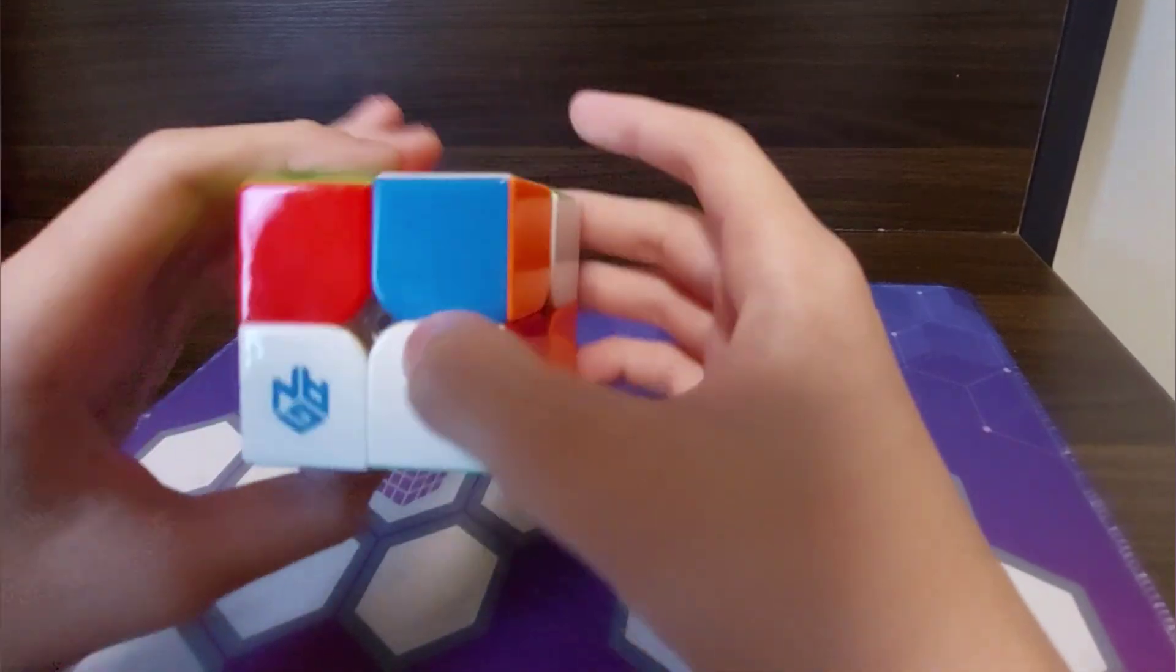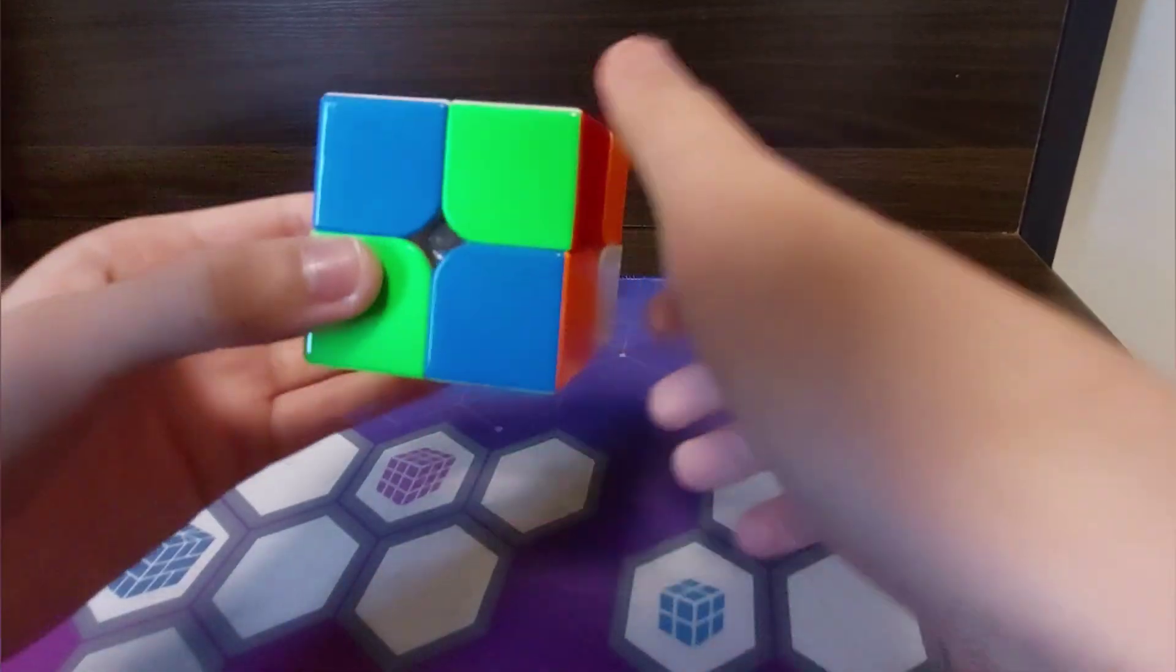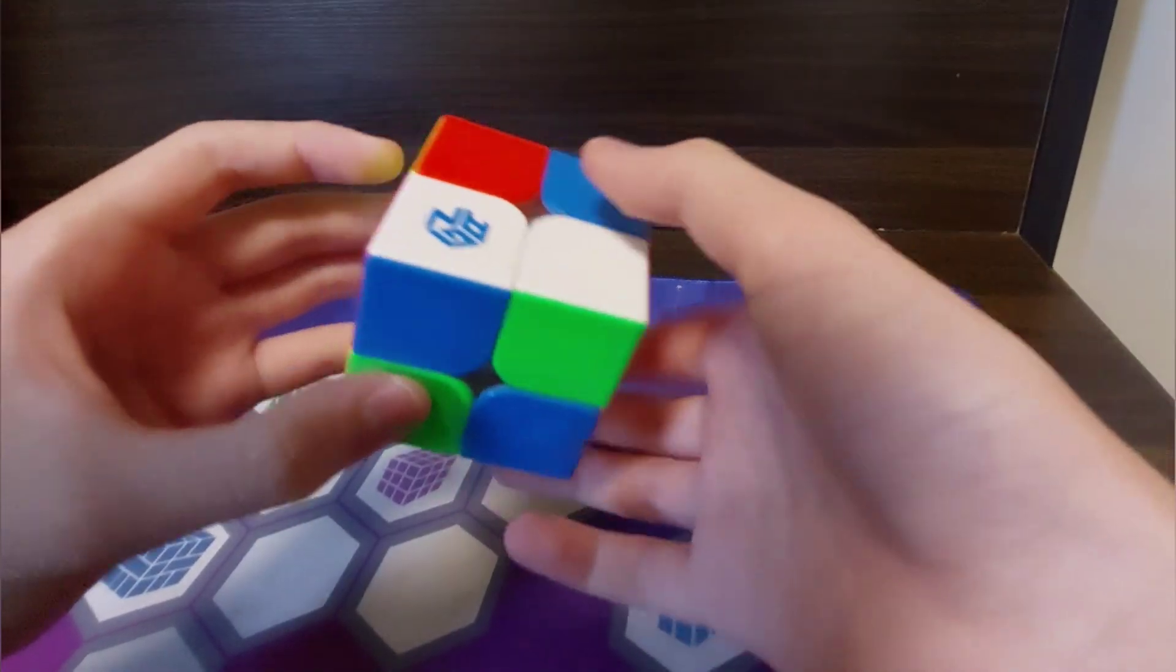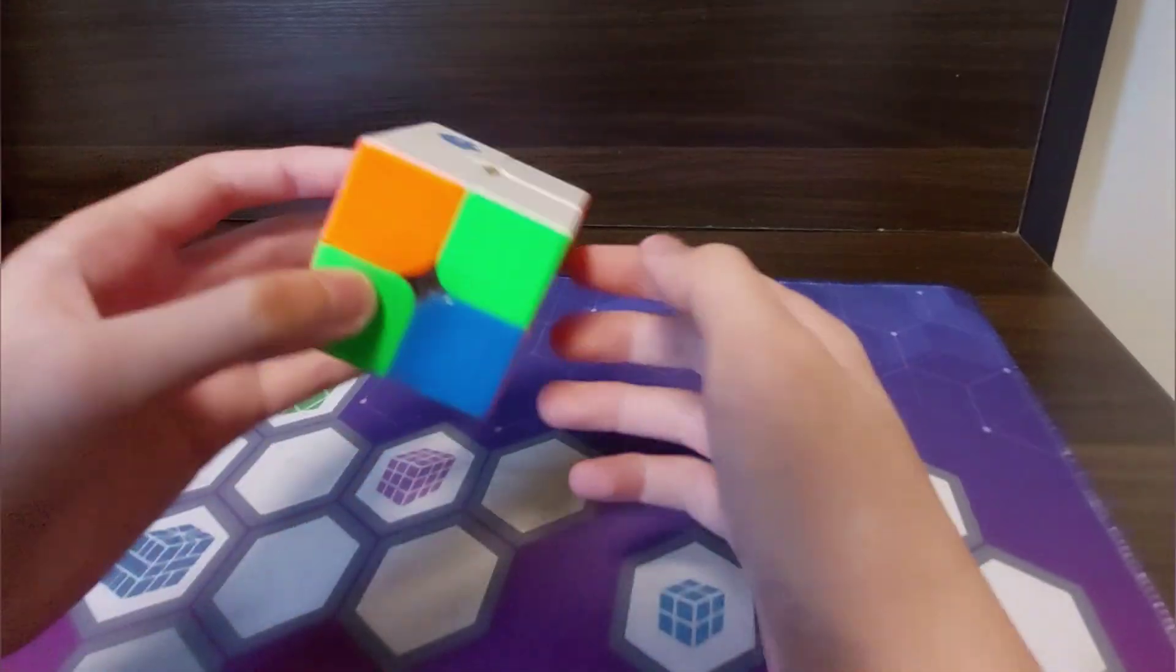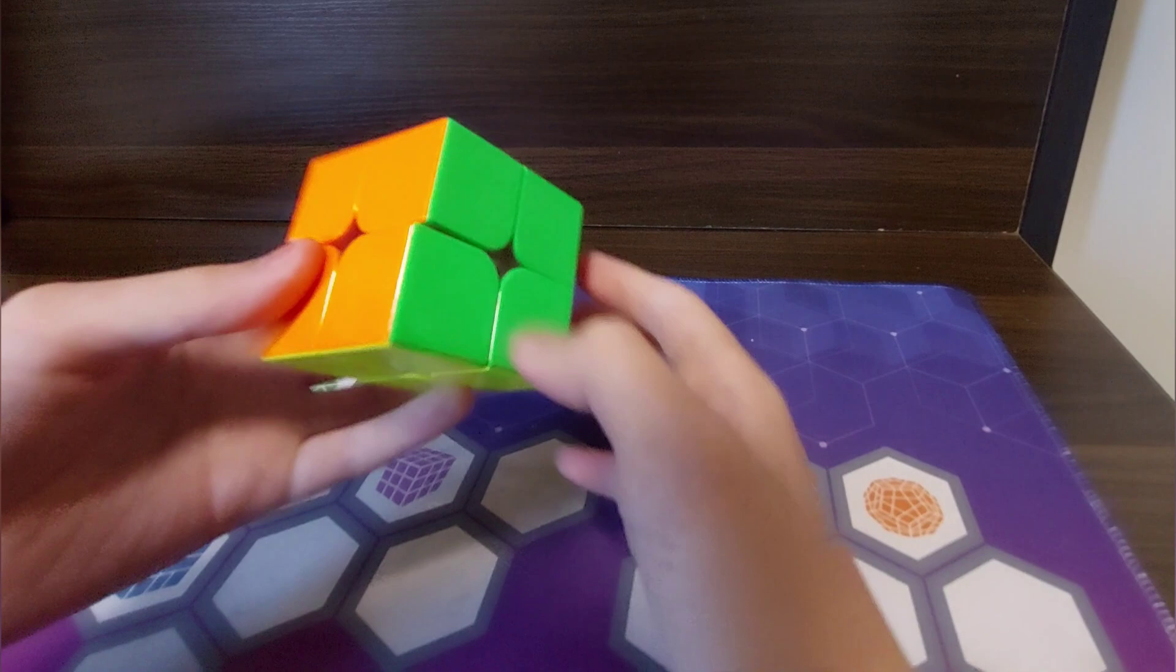So this is the third scramble and I got a 1.73. I saw that you could do on yellow, you could do an insert into this PBL case, which is what I did.